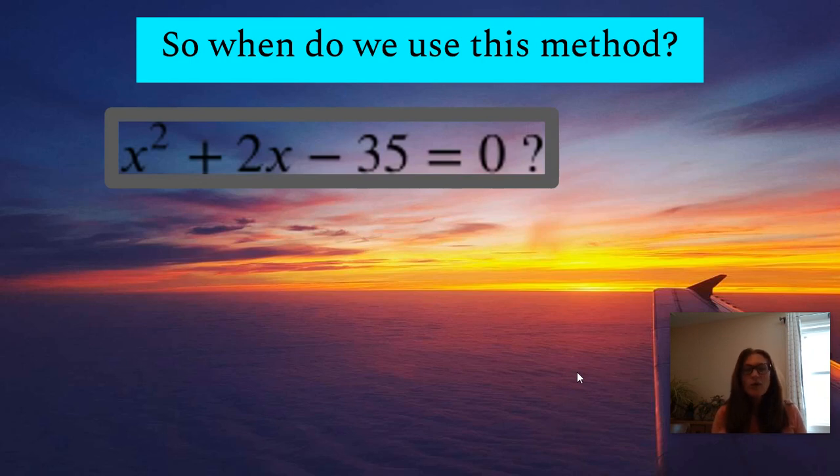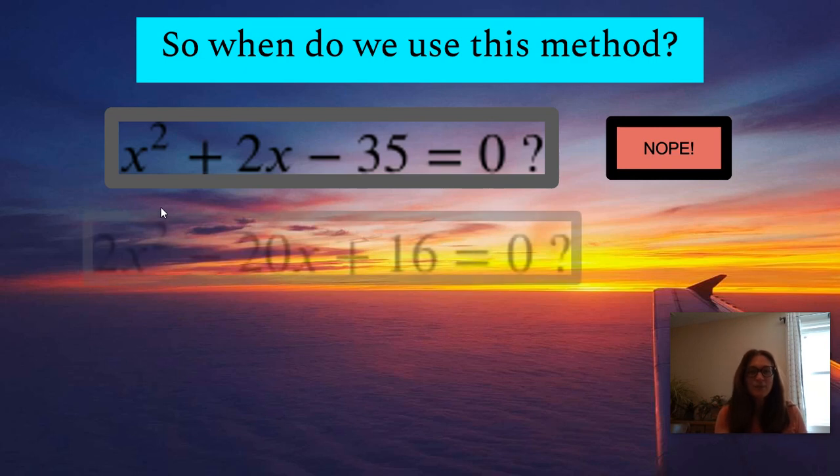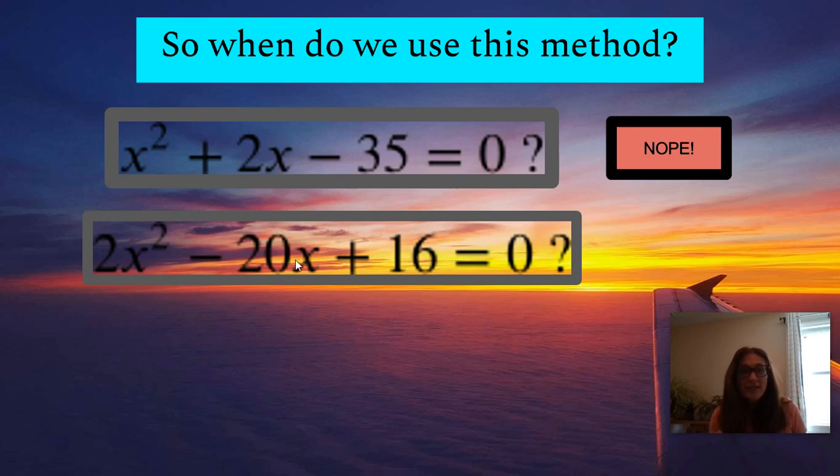So the first one, we would not want to use the method since the a value is 1. It's the coefficient of x squared. The second one, even though the a value is 2, look at the other values. We have negative 20 and 16. They're both divisible by 2. So we wouldn't need this method for this problem.